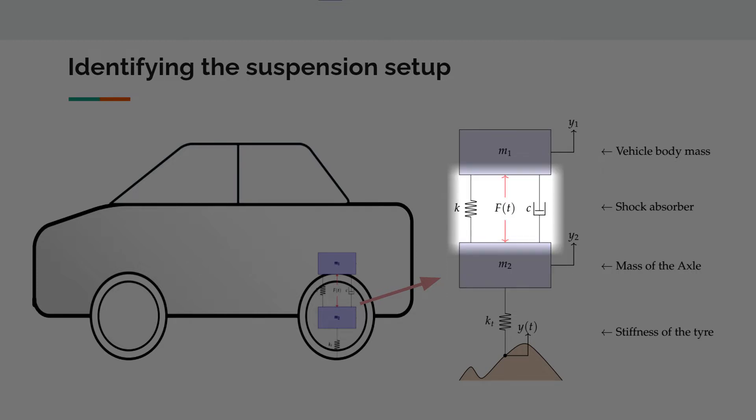This upper spring and damper represents the shock absorber in our vehicle, and this lower spring represents the stiffness of the tire.